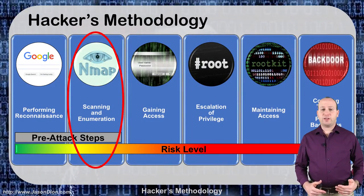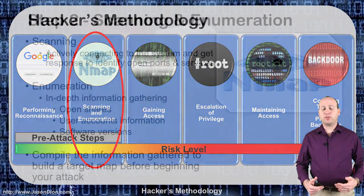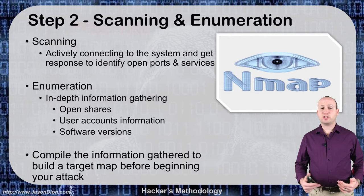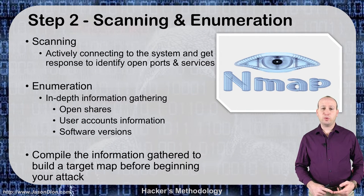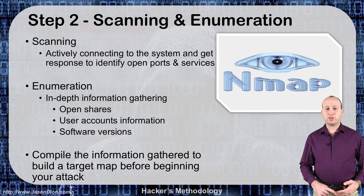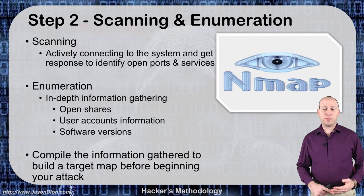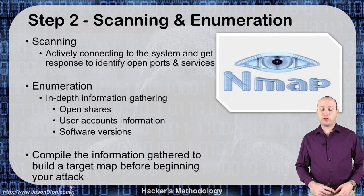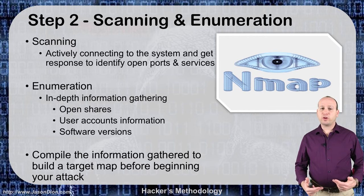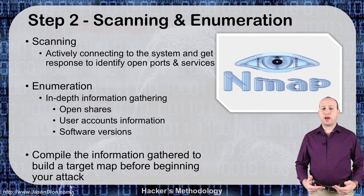The second step is where we start getting active — it's called scanning and enumeration. Here we're doing things like port scanning, actually reaching out and touching the network, finding out what ports are open and what services are running on those ports. We do our enumeration to figure out whether they're using Windows, Linux, or Mac, what versions they're running, and if they have a web server, whether it's Apache or IIS. All of this helps us build our attack before we ever get into stage three.